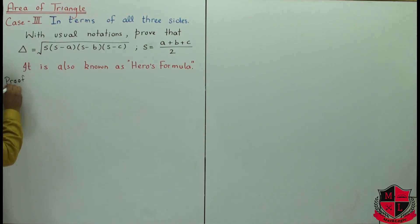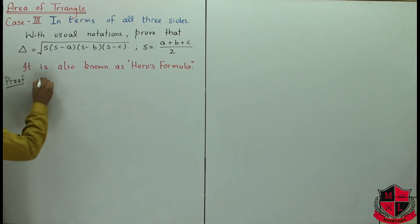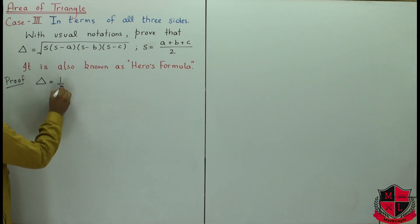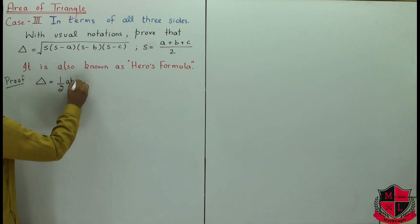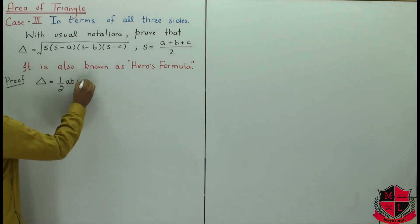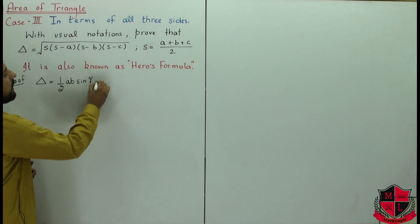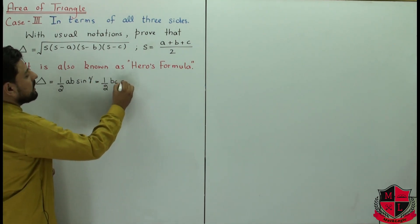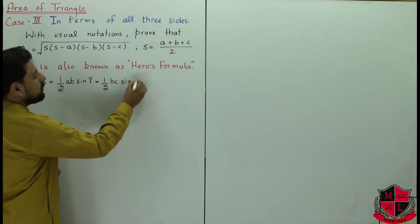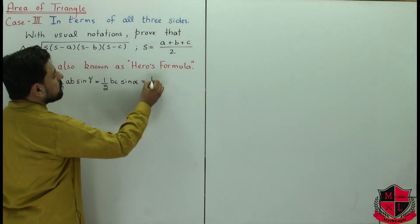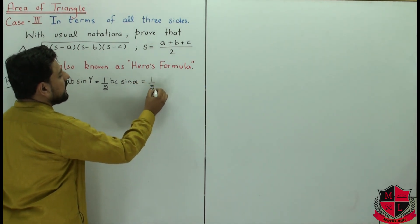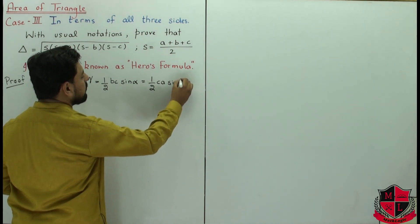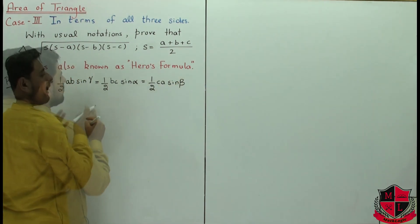We start from the formula for area of triangle that we derived before. If we use sides a and b, then the area is one-half ab times sine of gamma. If we write the formula using sides b and c, then we use sine of alpha. And if we use side ca, then the relevant angle is beta.